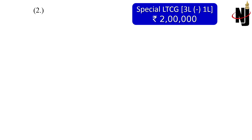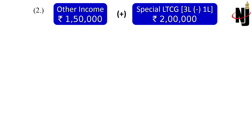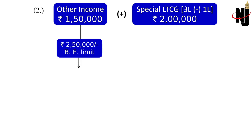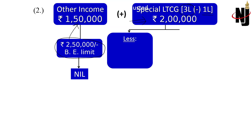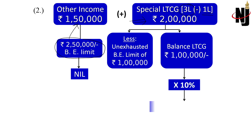Now consider a second example: LTCG under 112A is still 2 lakh rupees (3 lakh minus 1 lakh), but normal income is only 1 lakh 50,000 — less than the basic exemption of 2.5 lakh. Tax on 1.5 lakh normal income is nil after adjusting the basic exemption. However, 1 lakh of basic exemption limit remains unutilized. For a resident individual or HUF, this unexhausted 1 lakh can be adjusted against the 2 lakh of special LTCG under section 112A.